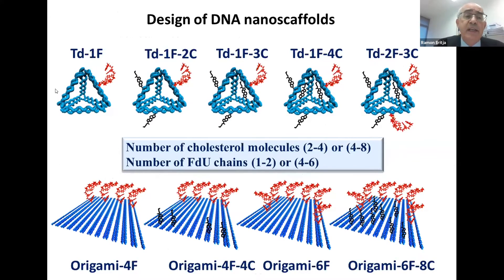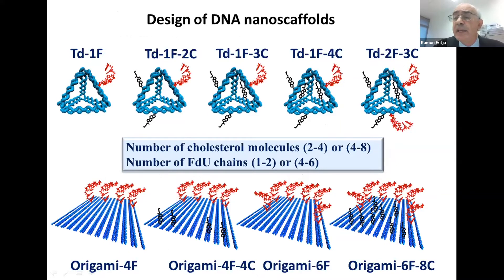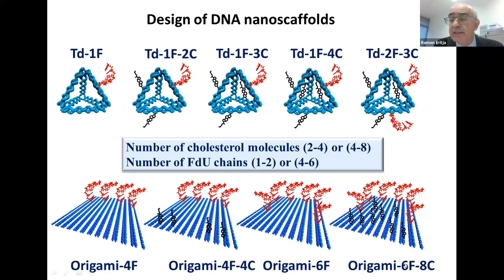For example, the tetrahedron carries 20 molecules of floxuridine (10 + 10). In the origami, because we have many more positions, we can introduce 6, 10, or 60 molecules of floxuridine, with the number of cholesterol molecules also increasing.